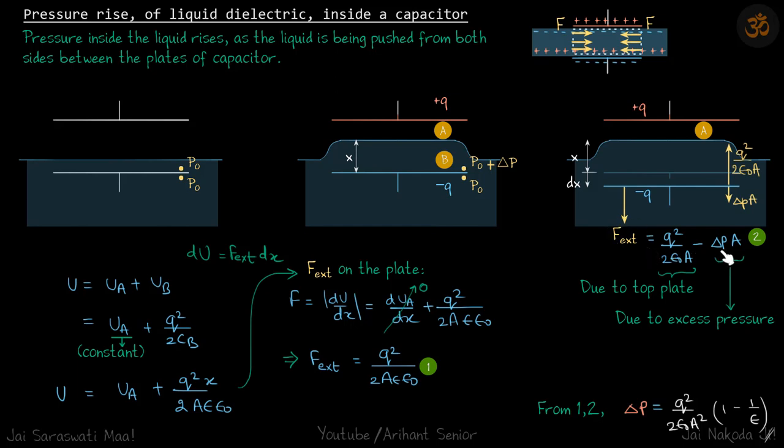Now second, we want to get rid of f external, so we will do that by writing how much change in potential energy happened because of this movement of dx. That du by dx will also be equal to f external, so we'll put that value of du by dx and equate it to this. Let's find what is the u first and then we can differentiate it. Let's divide into two regions: one is the empty region and second is the submerged region.